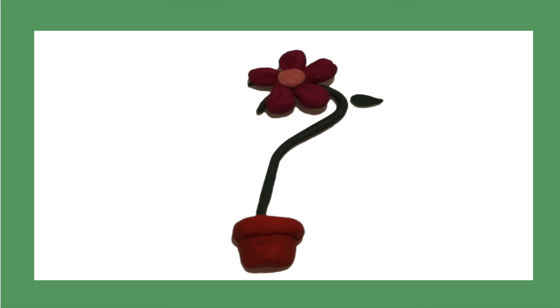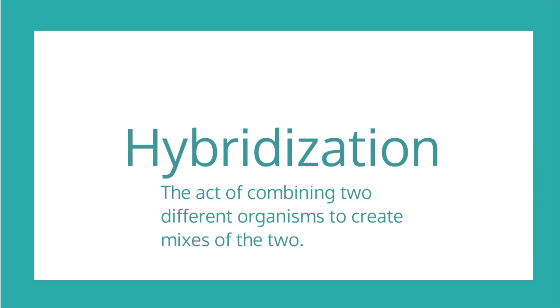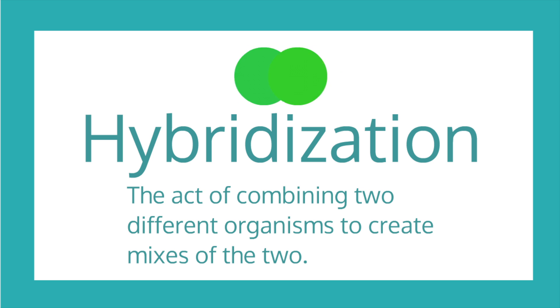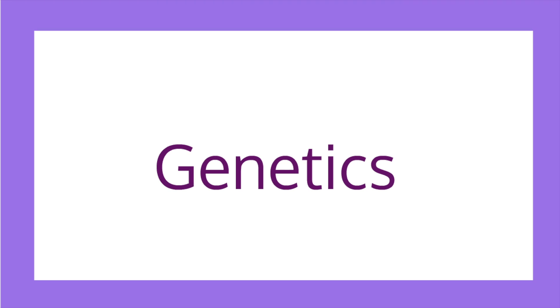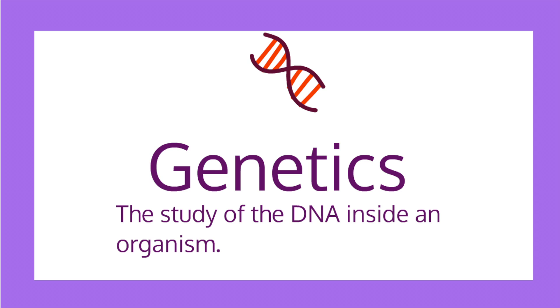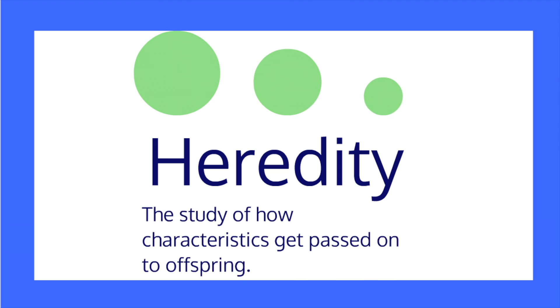Mendel started off gardening, but he ended up studying the hybridization of garden peas. Hybridization is the act of combining two different organisms to create hybrids, or mixes of the two. By studying the different hybrids he created, he began to learn more about the genetics of the plant. Genetics is the study of the DNA inside an organism. This information then helped him learn what traits were hereditary in his pea plants. Heredity is the study of how characteristics such as color, size, and shape get passed on to our offspring.